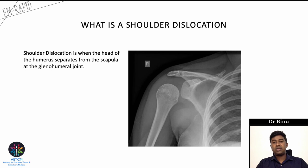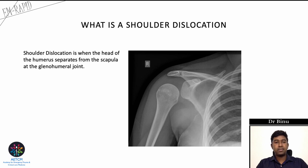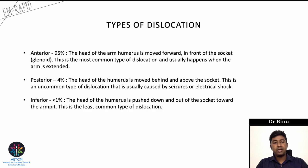A shoulder dislocation occurs when the head of the humerus separates from the scapula at the glenohumeral joint. It can happen in different directions. When the head moves in front of the glenoid socket, it is called an anterior dislocation, which is the most common type, accounting for more than 95% of cases.